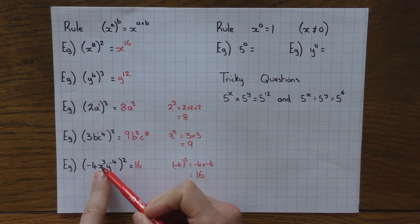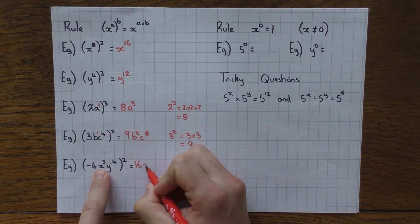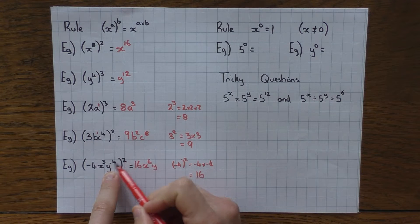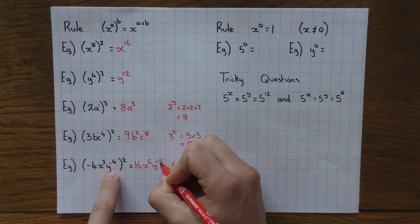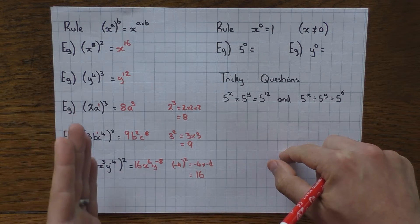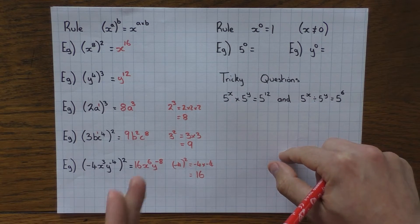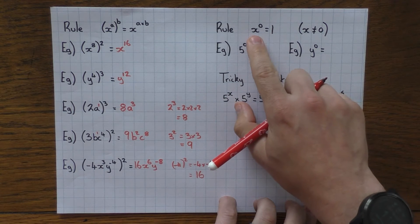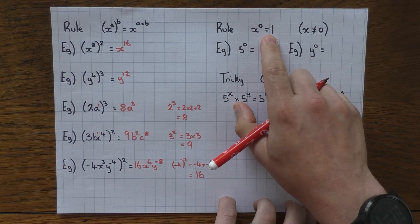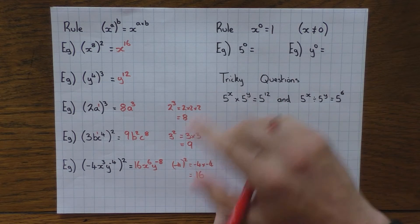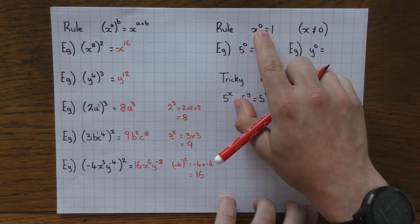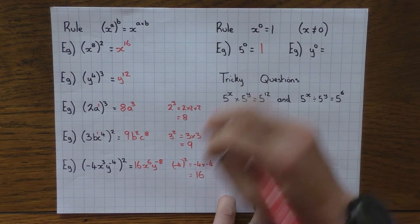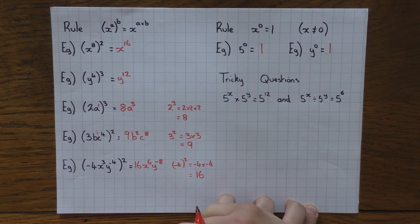Treat it step by step — deal with the number, then the first variable, then the second variable, and so on. That's the third rule. The fourth and final rule for this video: anything to the power of 0 equals 1. Apart from 0 to the power of 0, which is undefined. So 5 to the power of 0 is 1, y to the power of 0 is 1 — it's always 1.